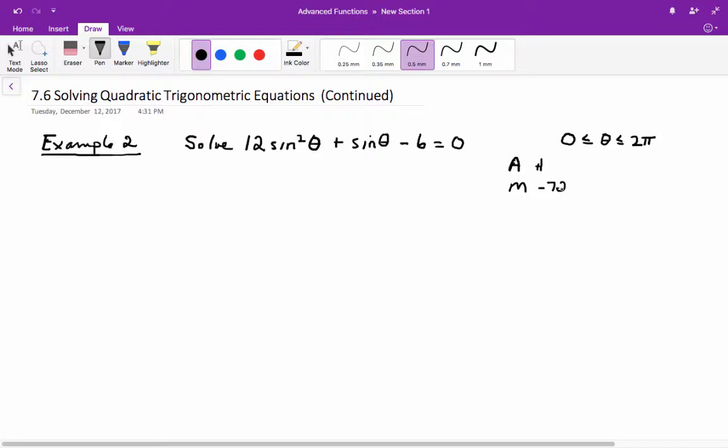The numbers that work are positive 9 and negative 8. So we break down the middle term into 12 sine squared theta plus 9 sine theta minus 8 sine theta minus 6 equals 0. Like decomposition, we group the first two, we group the last two. But once again, because of this preceding minus, we need to change this to a plus.